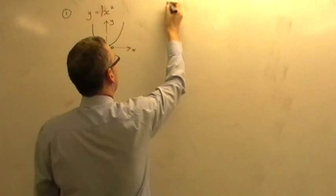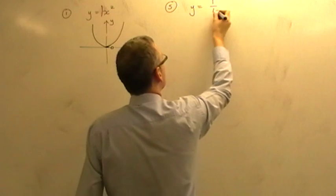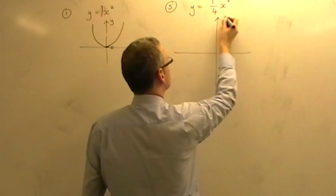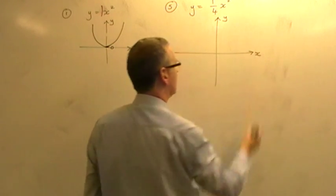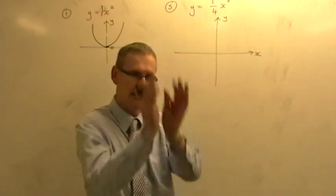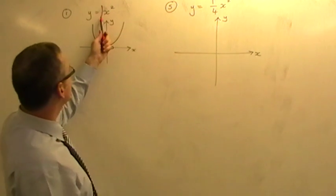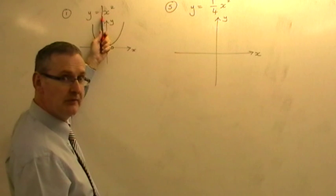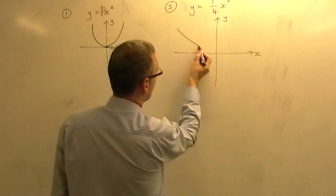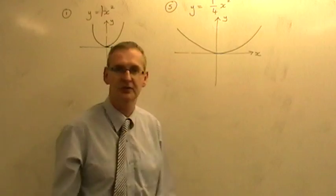Number five: y equals a quarter x squared. There's no number on the end, so it's not moving up or down. The number in front of the x squared is a quarter, which means it's going to be a less steep u-shape than the original. A quarter is less than one, so you draw a very shallow u-shape. That's the sketch of y equals a quarter x squared.